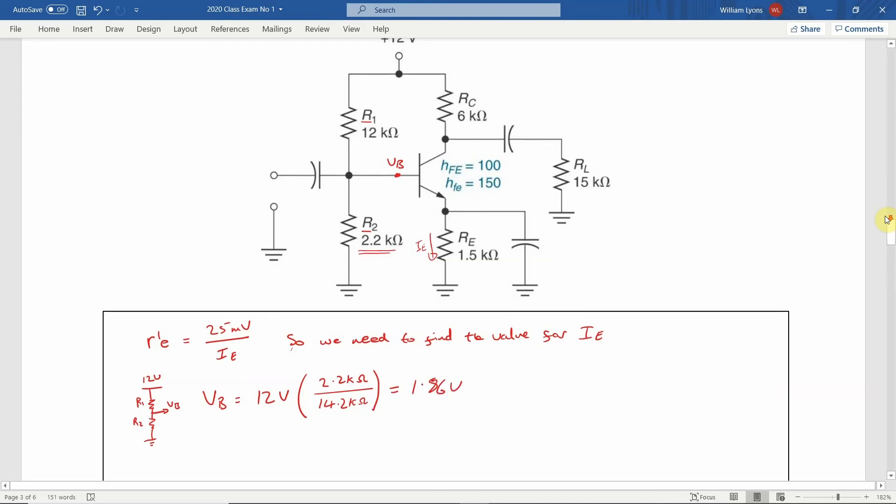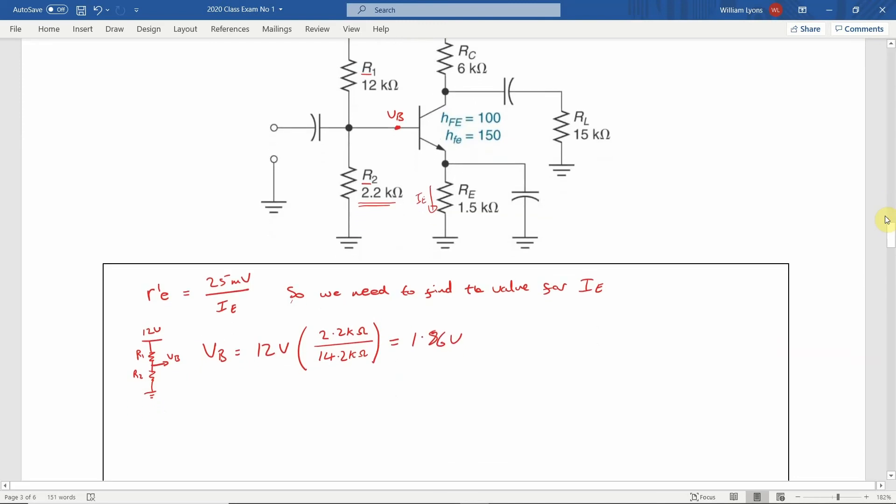We can now calculate the emitter voltage VE by taking the base voltage VB and subtracting VBE, that's the voltage across the base emitter junction of the transistor. This value is 0.7V. This results in an emitter voltage of 1.16V. Let's note the value of VE on the circuit diagram.